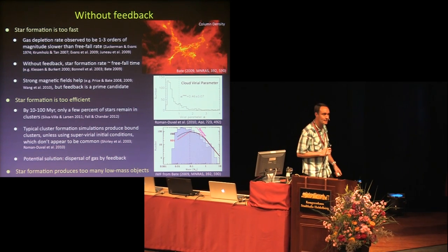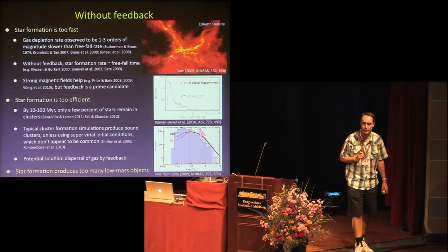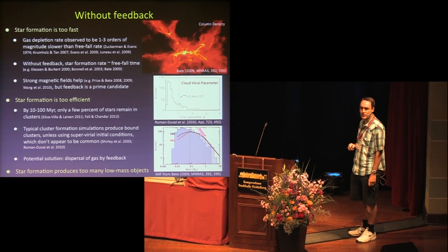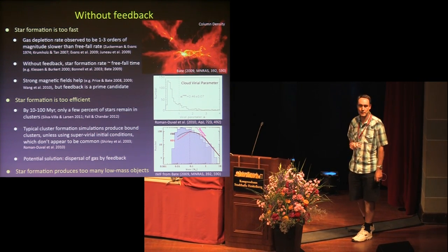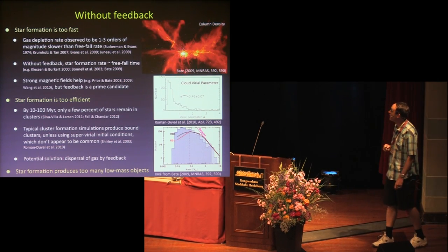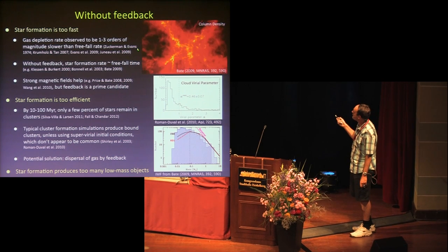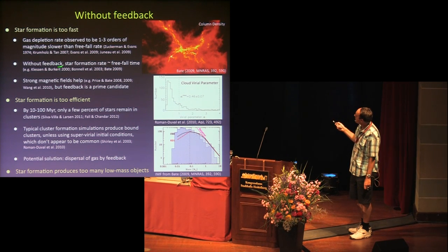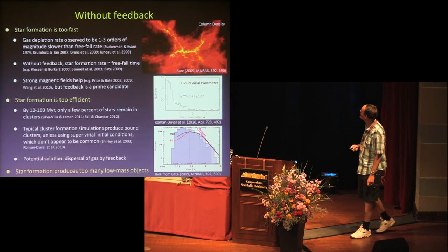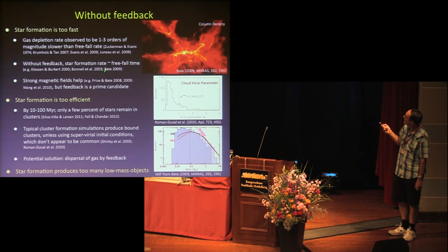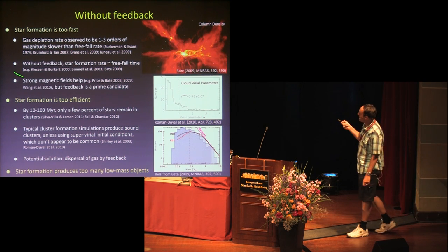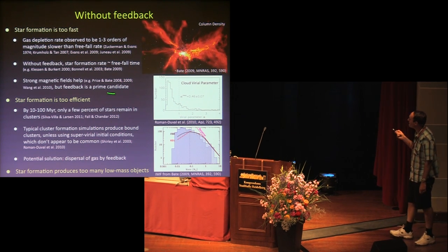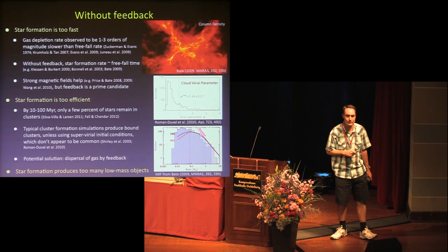The other reason feedback matters is that we probably get the wrong results without it. Without feedback, star formation is too fast. The gas depletion rate is observed to be one to three orders of magnitude slower than the freefall time, going back to Zuckerman and Evans in the 70s and more recently Evans in 2009. Yet without feedback in computer simulations, we find the star formation rate is basically the freefall time. Strong magnetic fields help — slowing it down by a factor of four or five — but feedback is also a prime candidate for driving turbulence and slowing the rate of star formation.